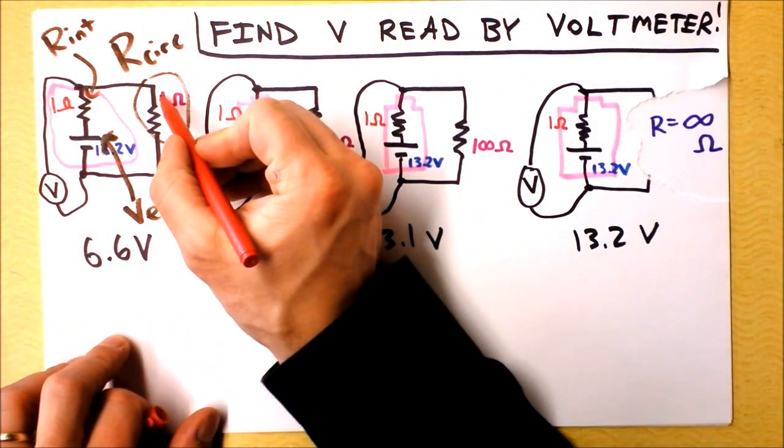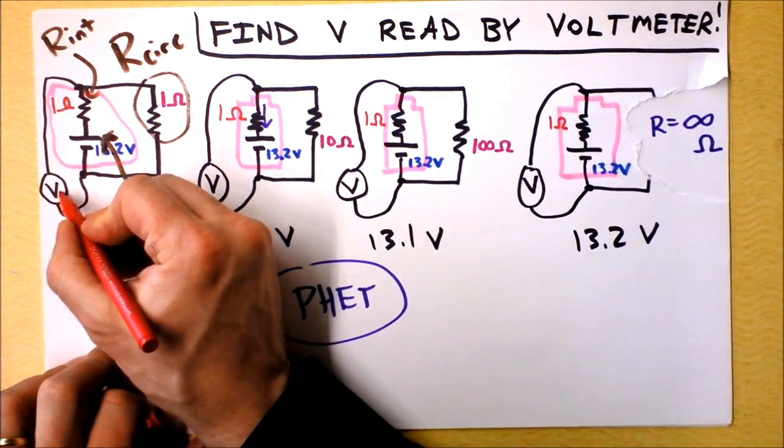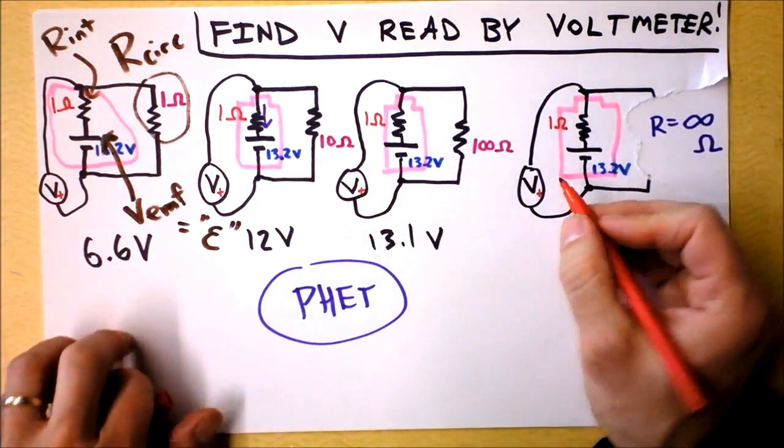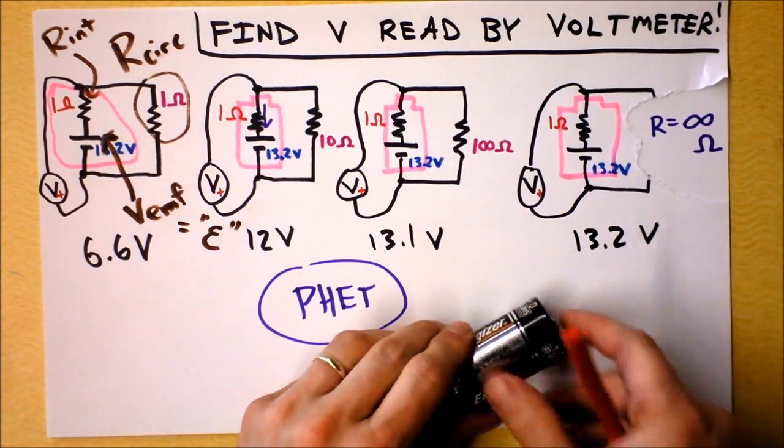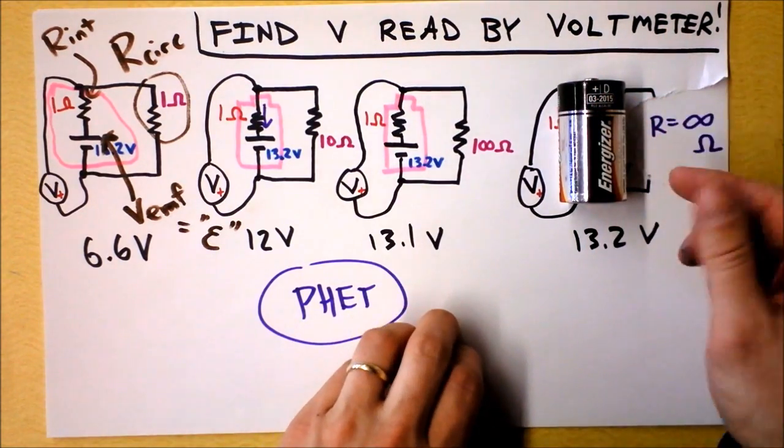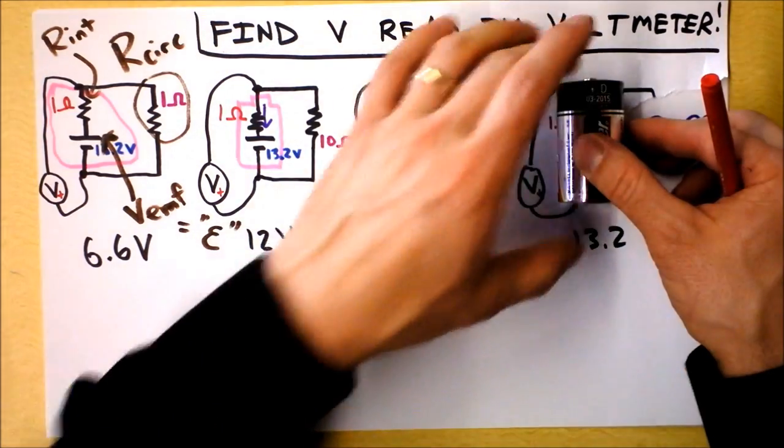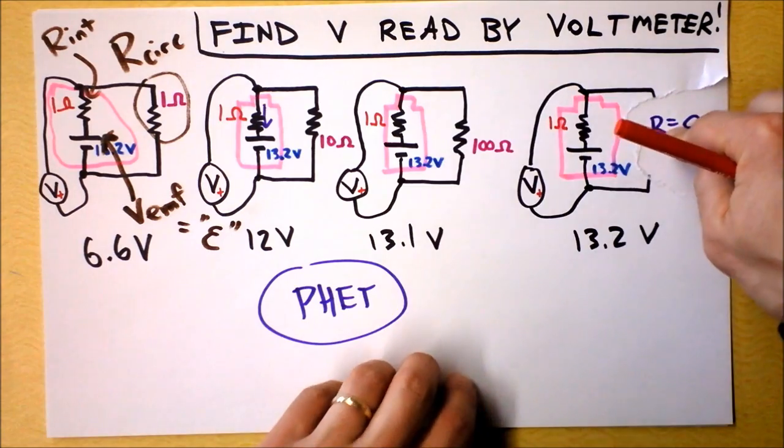I'm going to call this resistance out here the external resistance I'm going to call it the resistance of the circuit. This guy right here is an internal resistance I'm going to call that the resistance internal R_internal and this guy right here I'm going to call the voltage EMF.